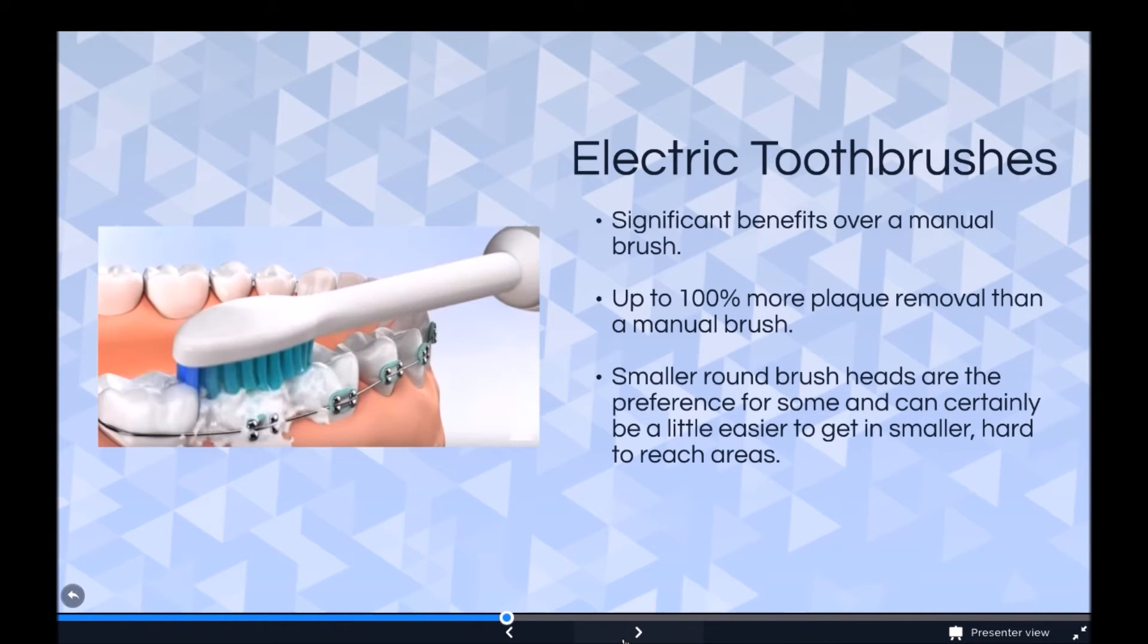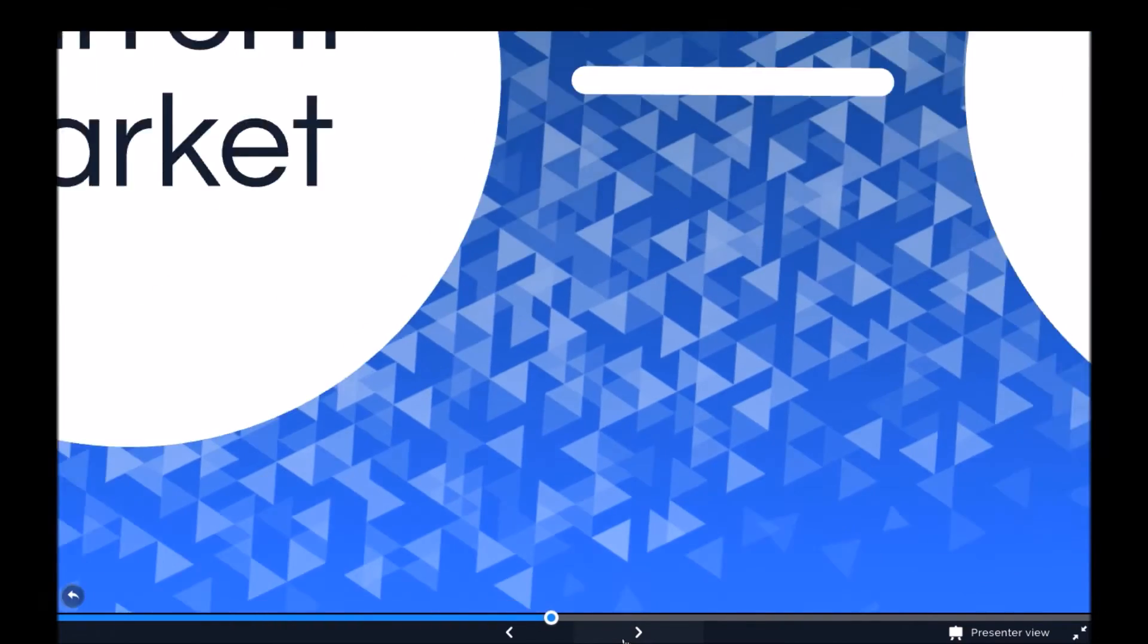Electric toothbrushes: significant benefits over a manual brush, up to 100% more plaque removal than a manual brush. Smaller round brush heads are the preference for some and can certainly be a little easier to get in smaller and hard to reach areas.